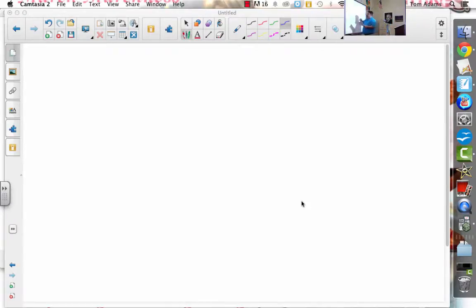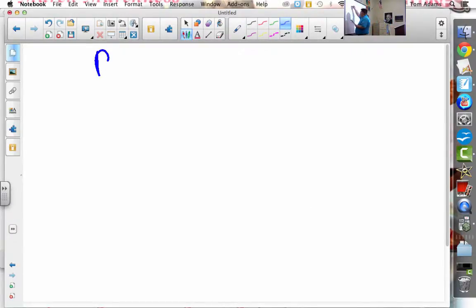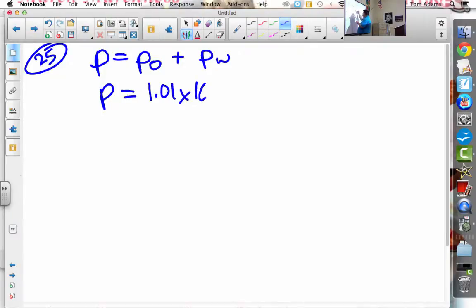So the absolute pressure, there's a formula in your book. We have the atmospheric pressure, and then we have pressure due to water. In problem number 21, we know that the atmospheric pressure is just 1.01 times 10 to the 5th, right? And that's newtons per meter squared.